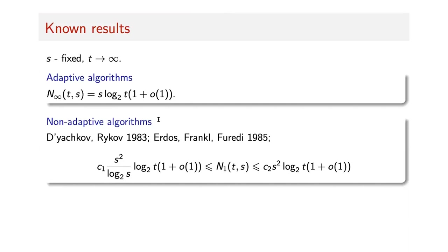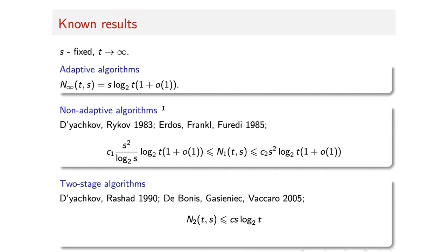Non-adaptive algorithms can be performed in parallel, and for many applications it is much easier to perform a lot of tests in parallel. For two-stage algorithms, it is already known that the number of tests is also linear in S — we have some constant C greater than one — and this is very good for applications, because we can perform almost all tests in parallel, but we need only slightly more tests than for adaptive algorithms.